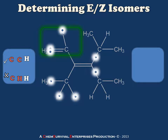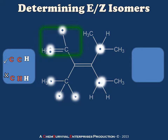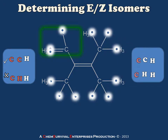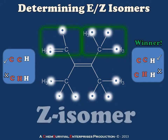For the right-hand side, I go through the same exercise: moving out one bond to find that carbons are tied, then moving out a second bond in the lower group to get a list of C, H, H, and doing so in the top group gives C, C, H. Comparing these lists determines our winner. In this case, both of the higher priority substituents are at the top — and therefore we would call this a Z isomer.